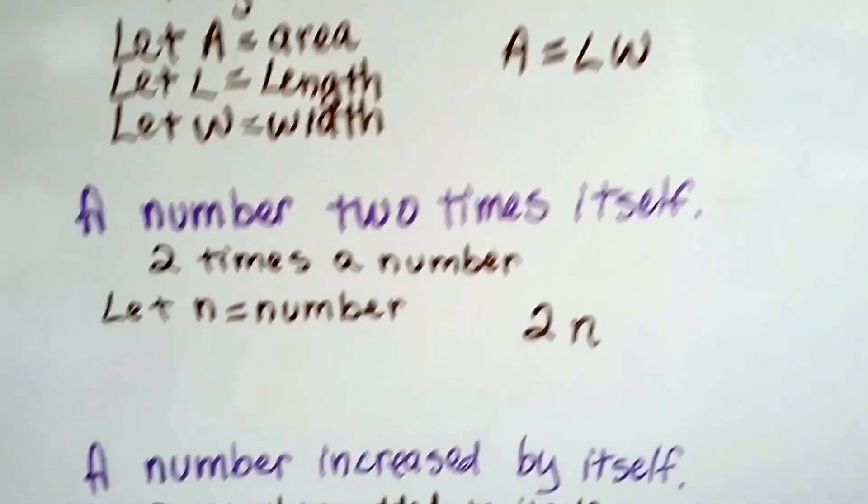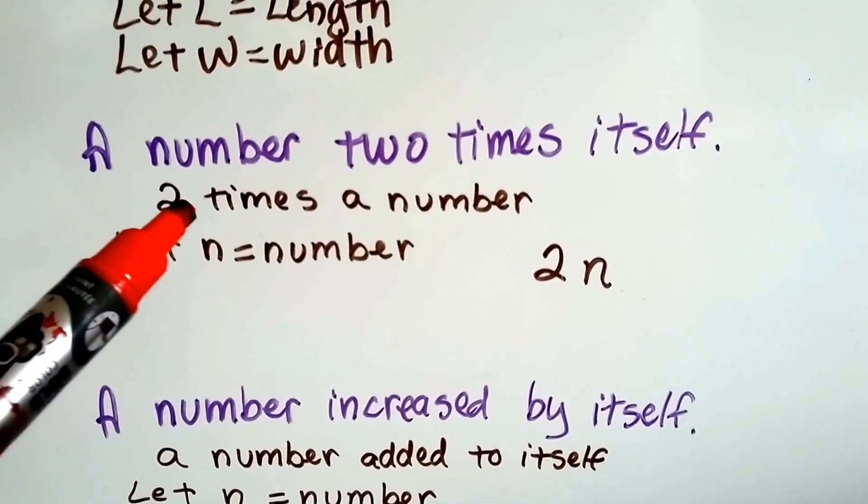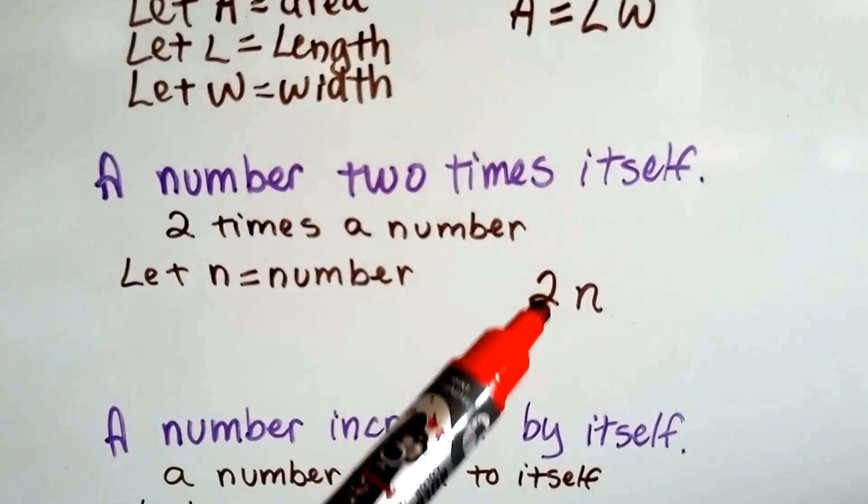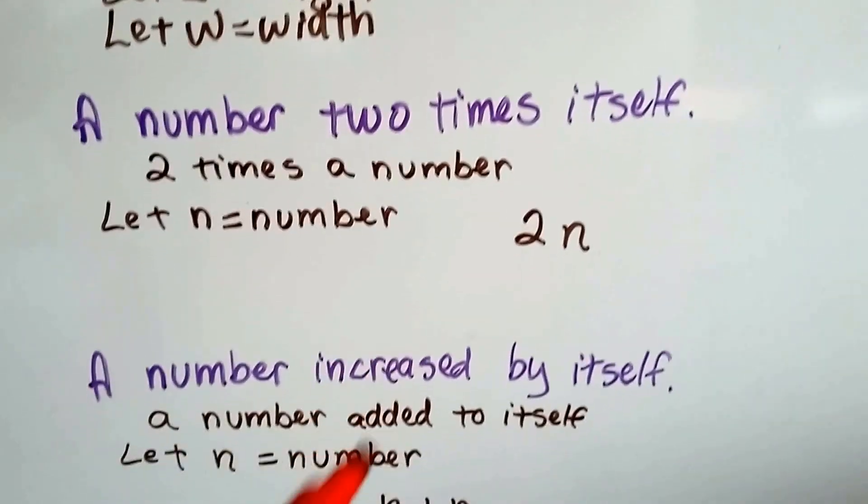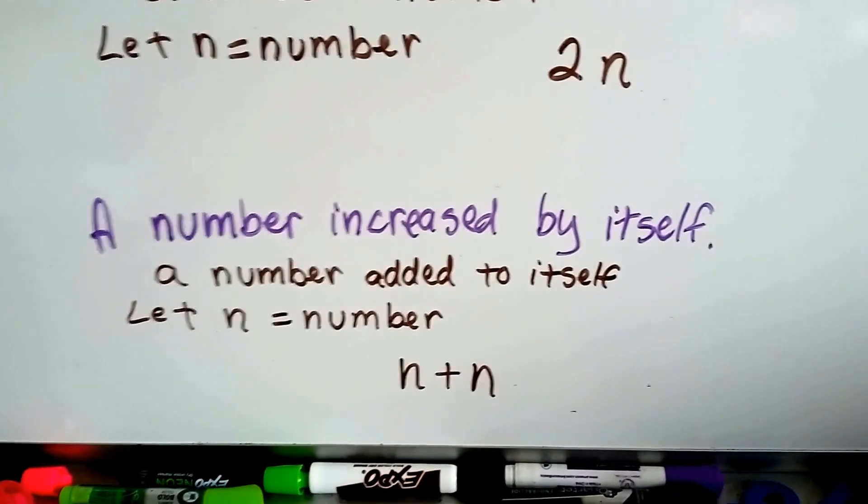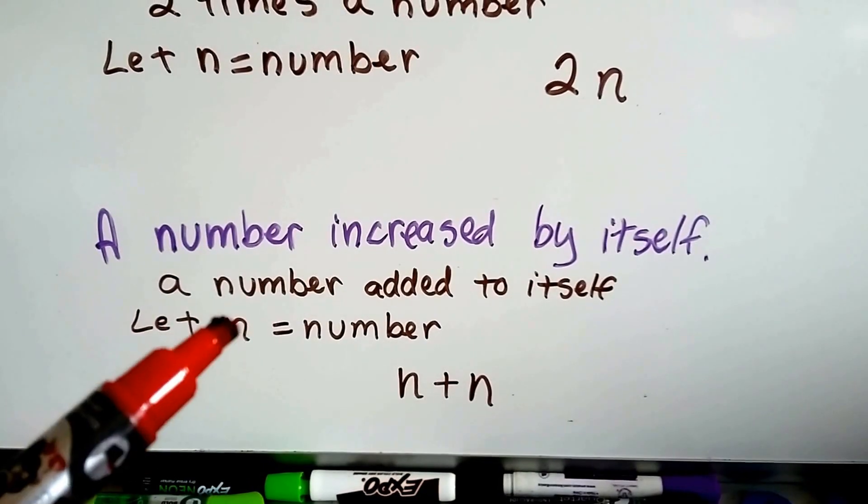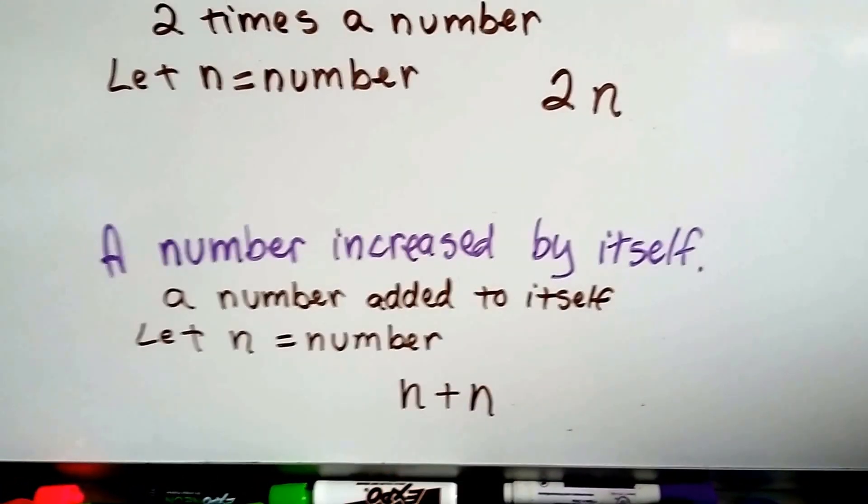A number 2 times itself. That means 2 times a number. So if we let N equal number, then that's 2 times that number, 2N. A number increased by itself. Well, that means a number added to itself. So if N stands for number, that means number plus number.